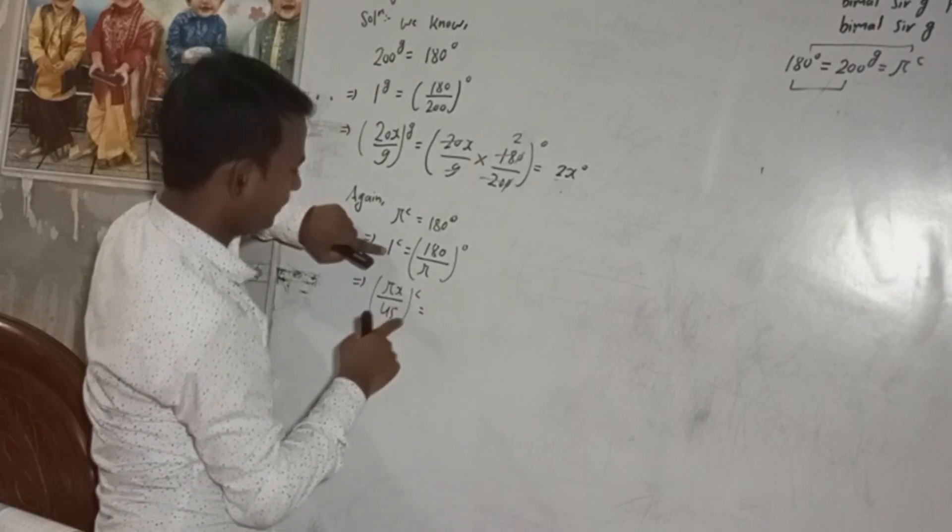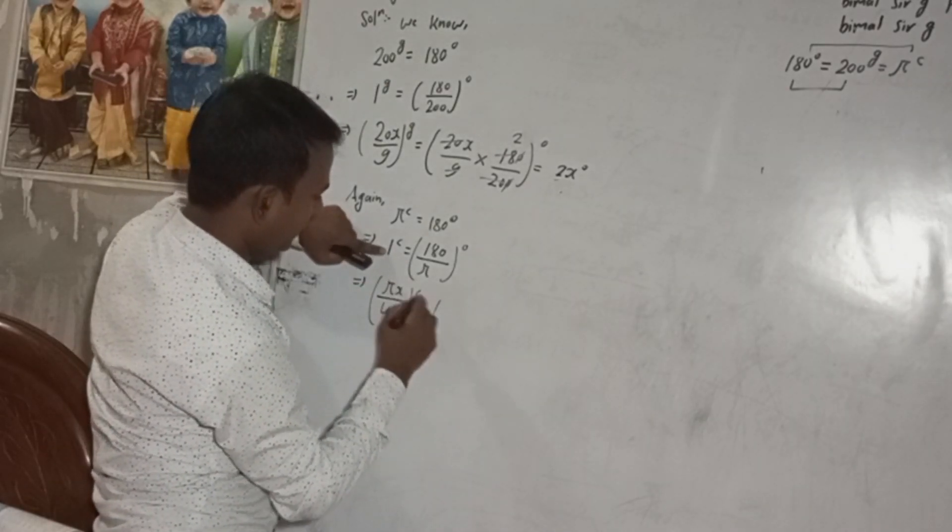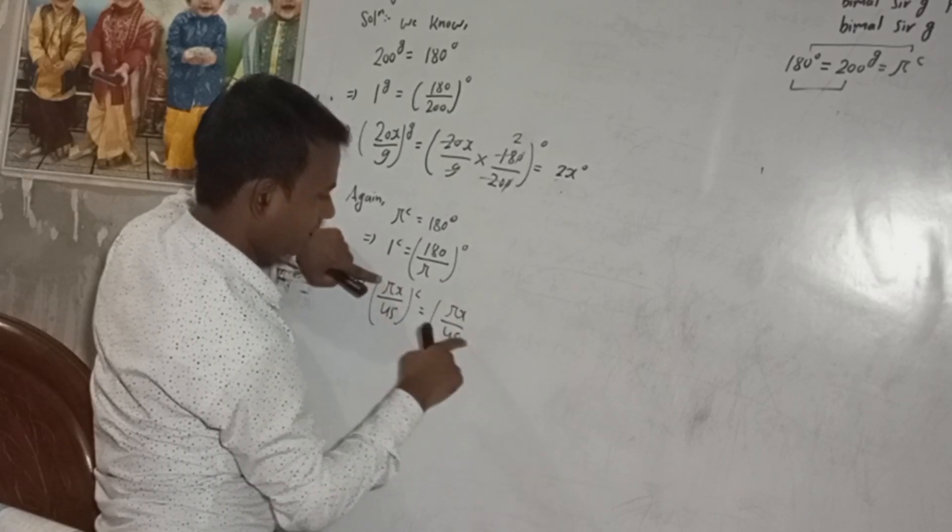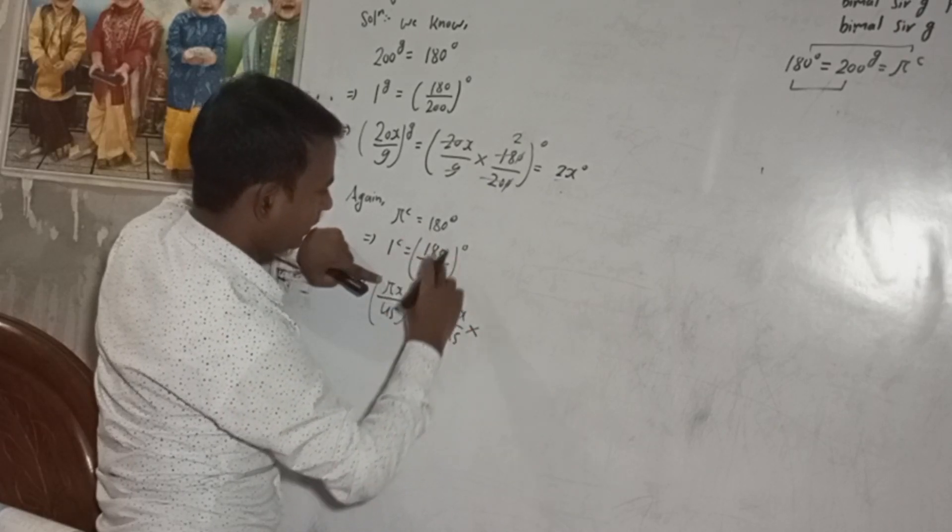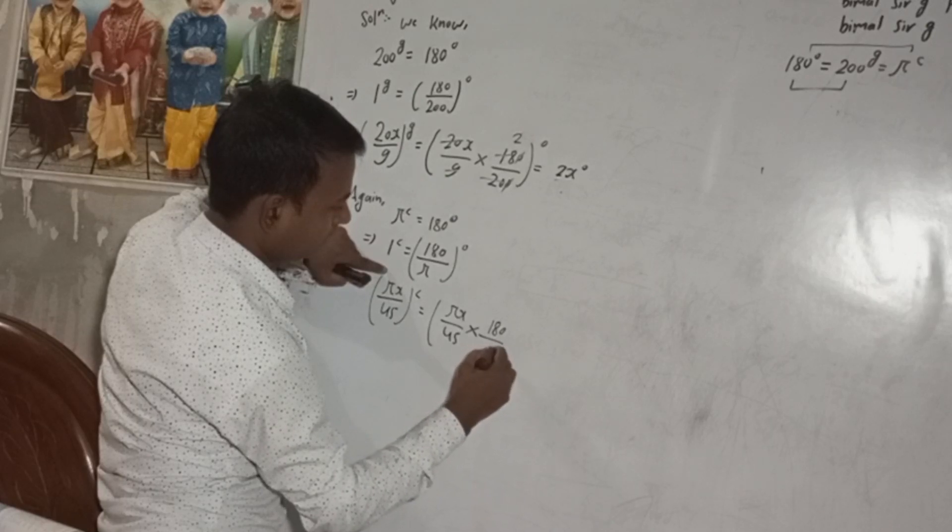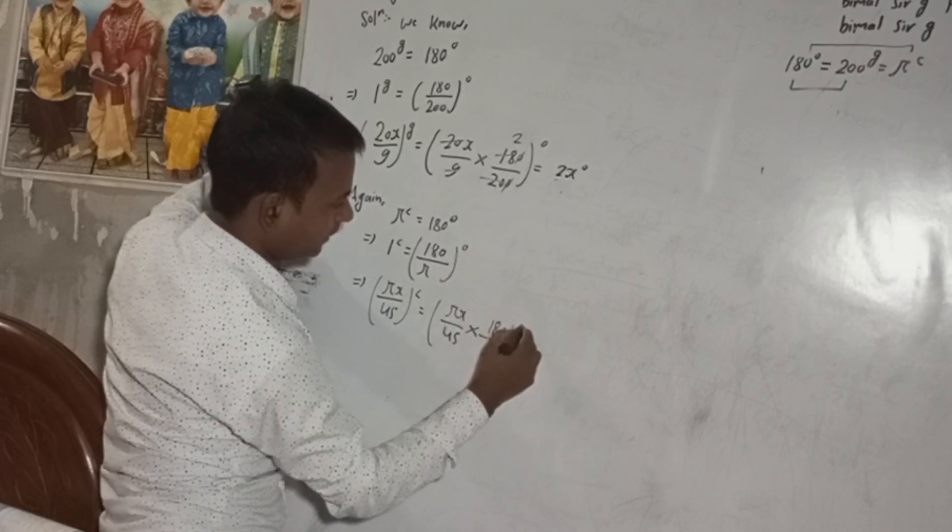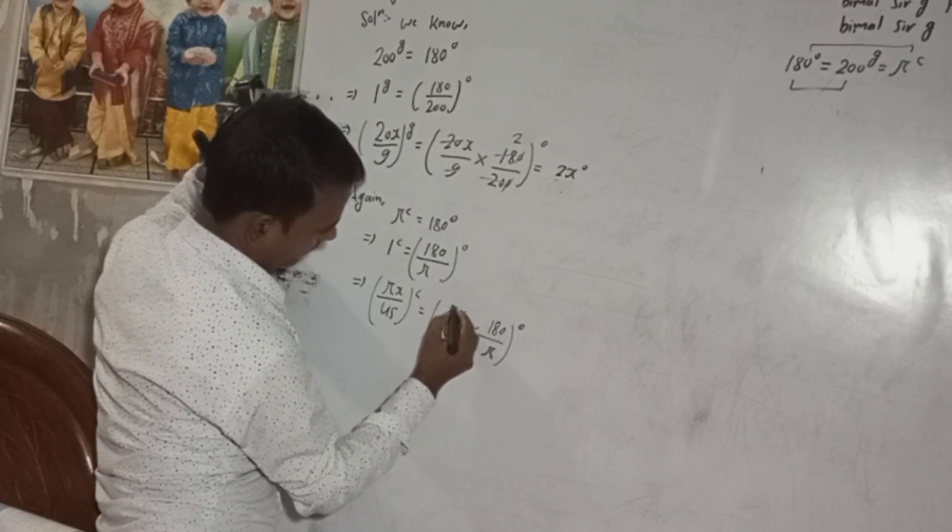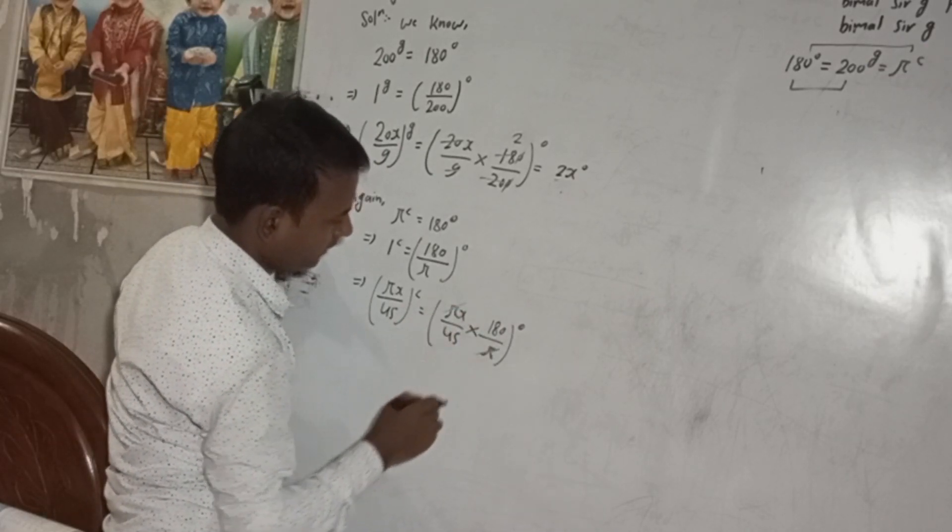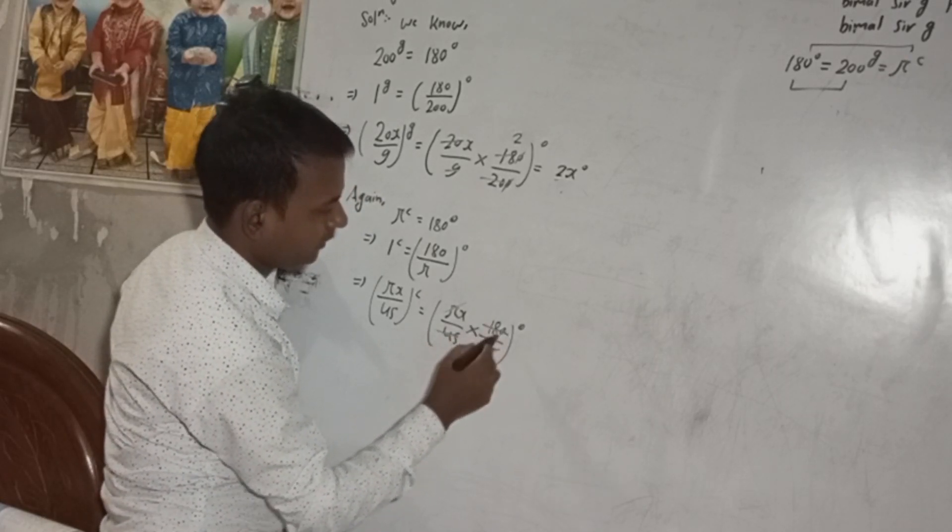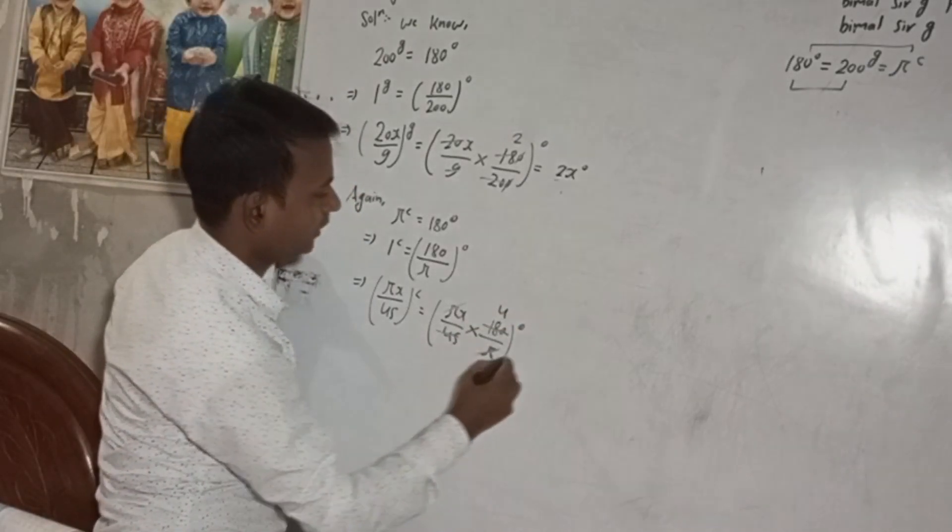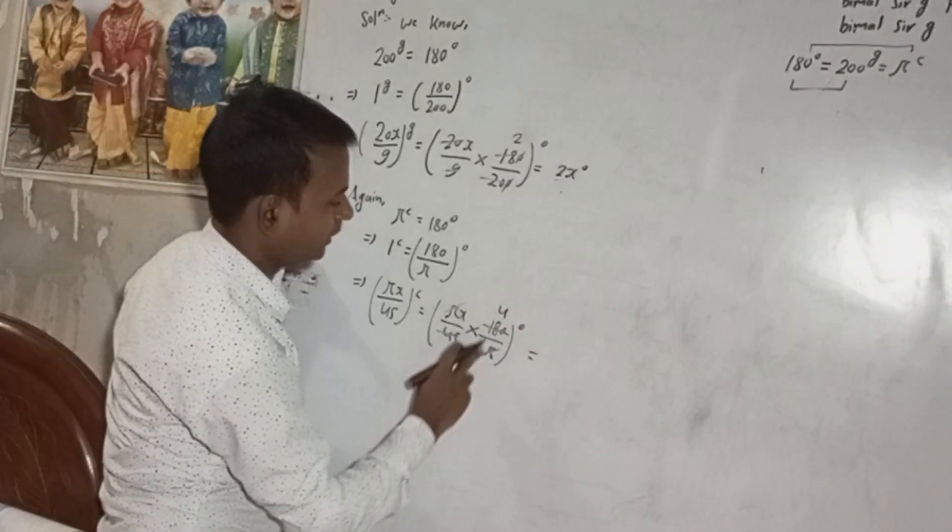Therefore πx/45 radian is equal to, in place of this, now we have to put here this πx/45, same there, and into this part. So 180 by π and then this degree.